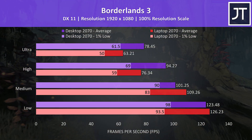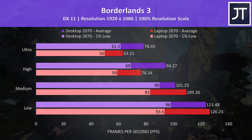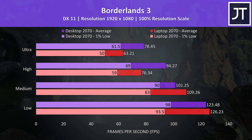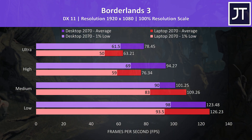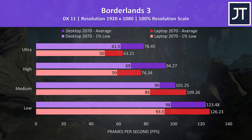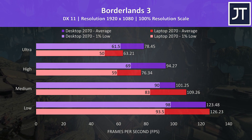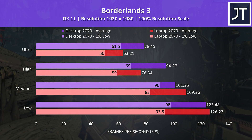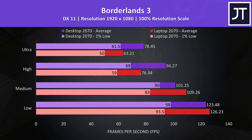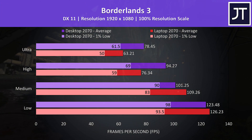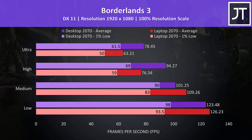Borderlands 3 was also tested using the game's benchmark tool, and this game saw the biggest difference out of all 15 titles tested at ultra settings, with the desktop offering a 24% boost to average FPS. The difference was much less at lower settings, where the laptop was actually slightly ahead in average FPS at low, but either way quite close.